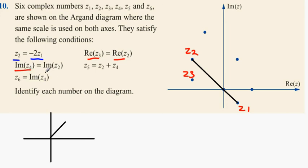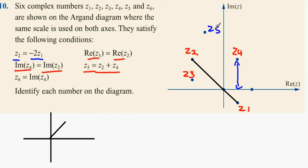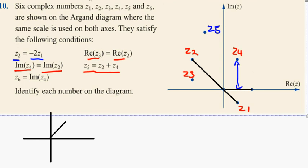The imaginary part of Z4 equals the imaginary part of Z2, meaning they have the same Y value. So this here is going to be Z4. Then we have Z5 equals Z2 plus Z4. Z2 plus Z4 have the same height as each other, so when you add both complex numbers together they should be double in height — making this one Z5. Finally, Z6 equals the imaginary part of Z4, which is this height here. Rotating that line shows it's the same length, so this part here is Z6.